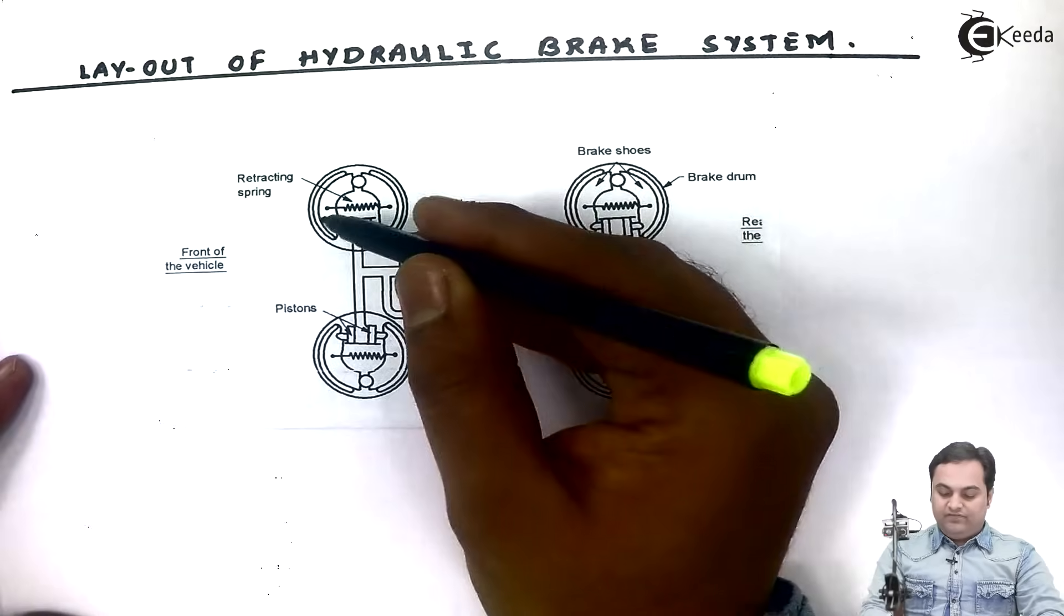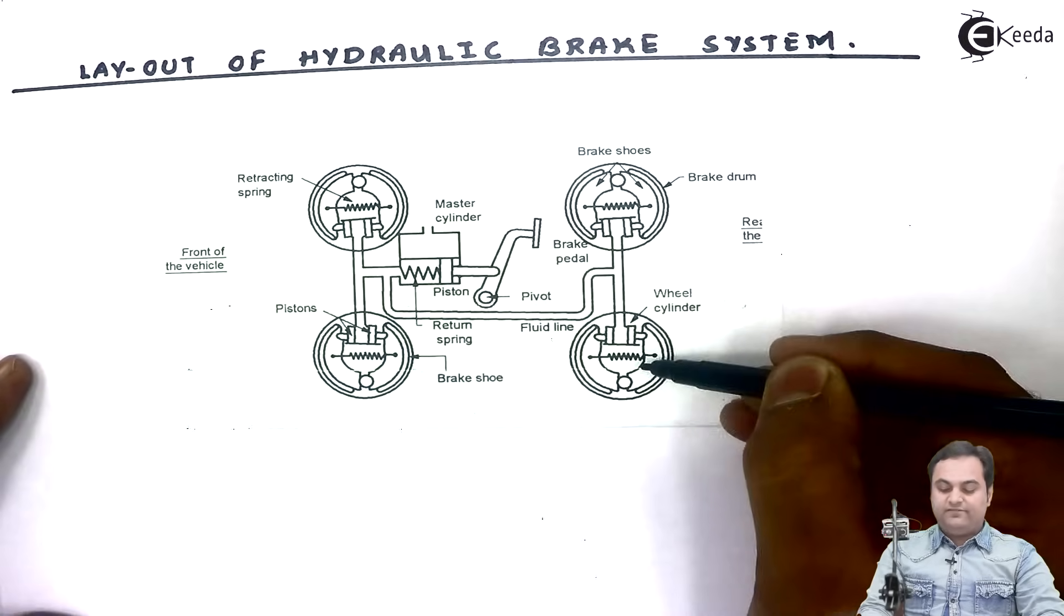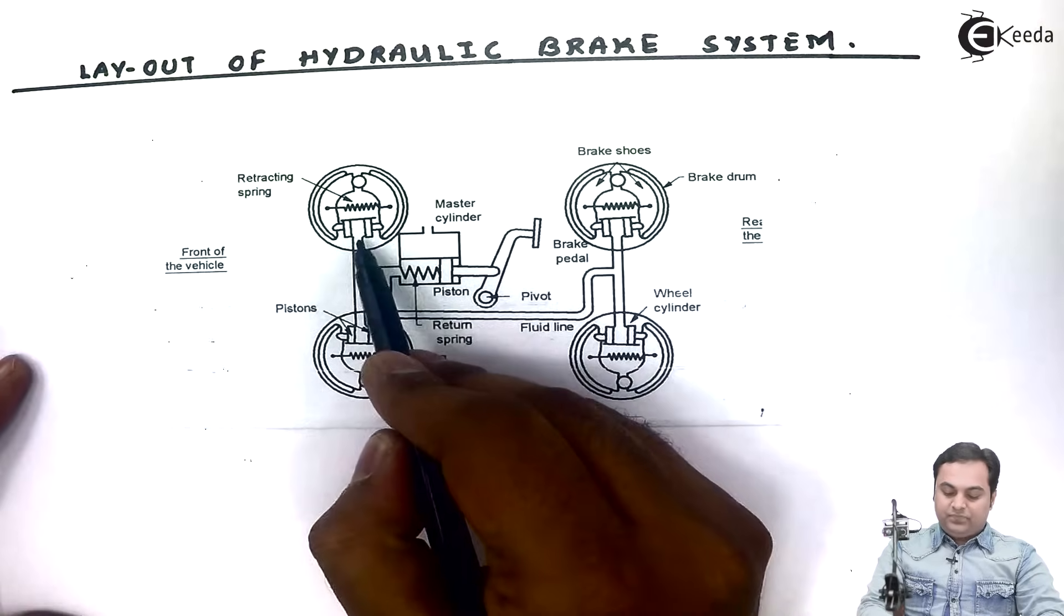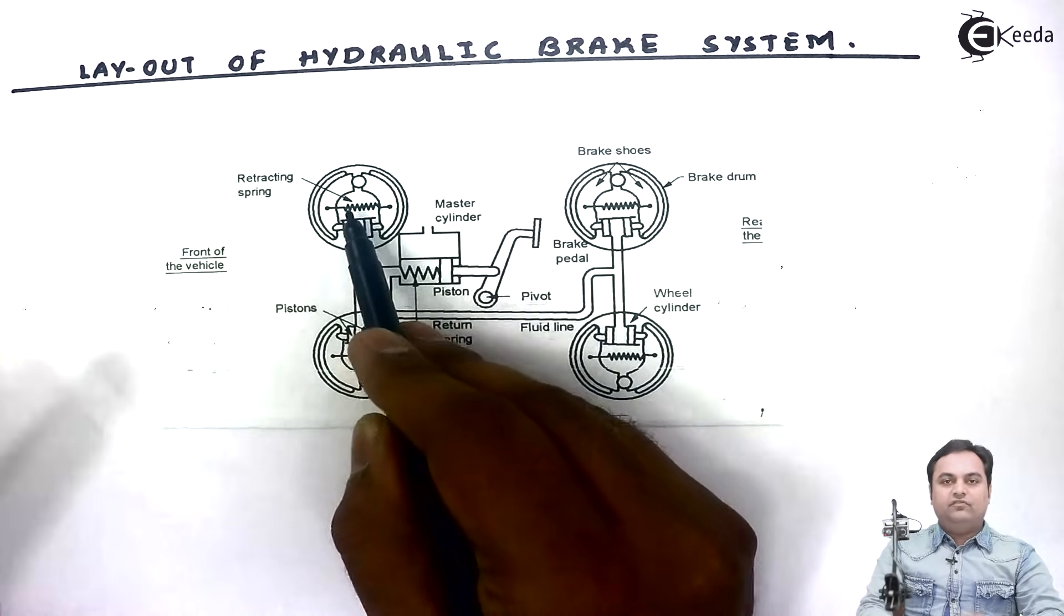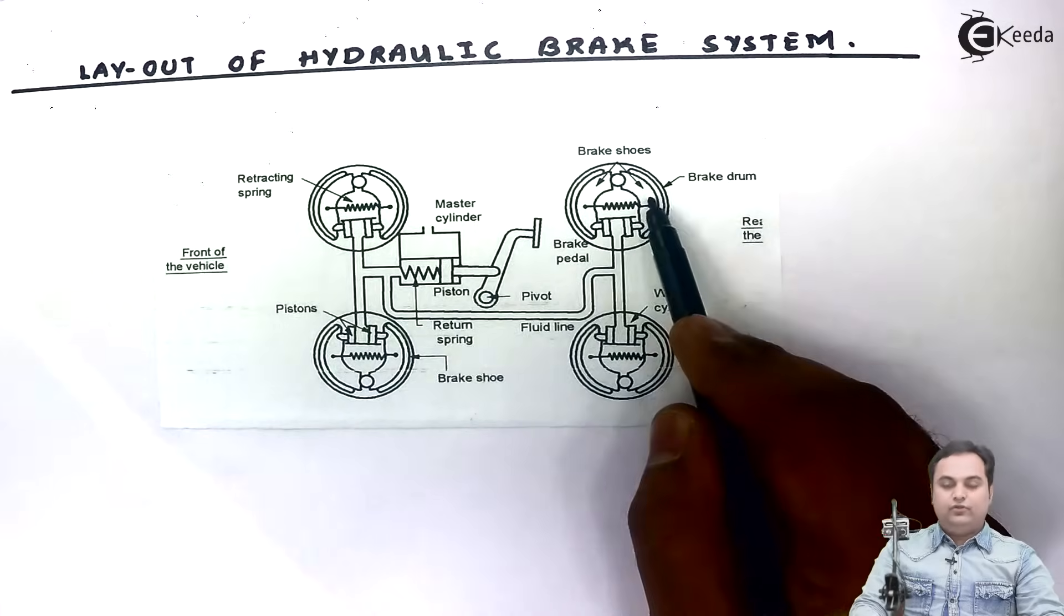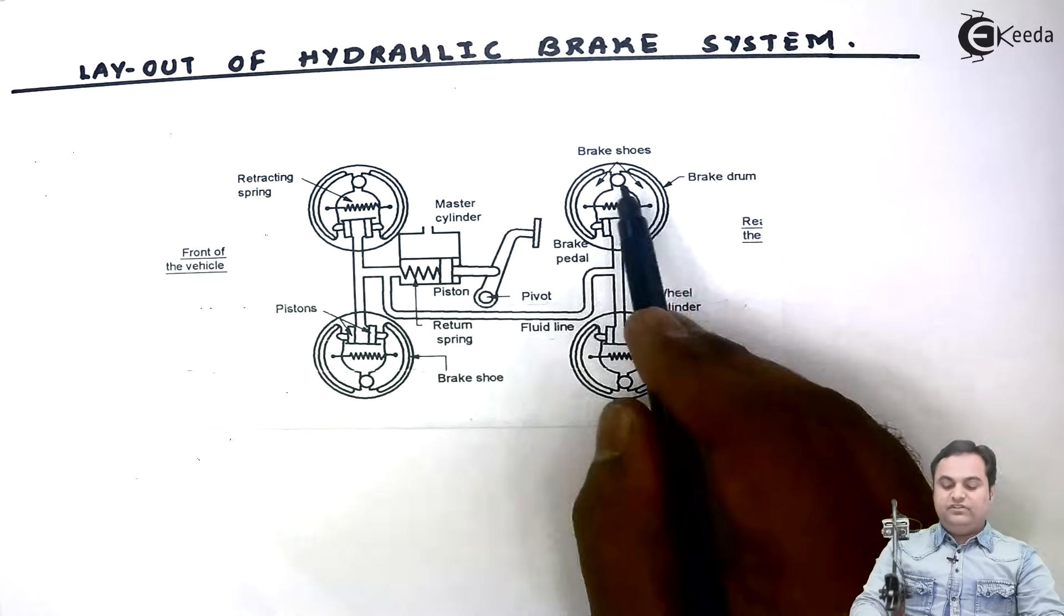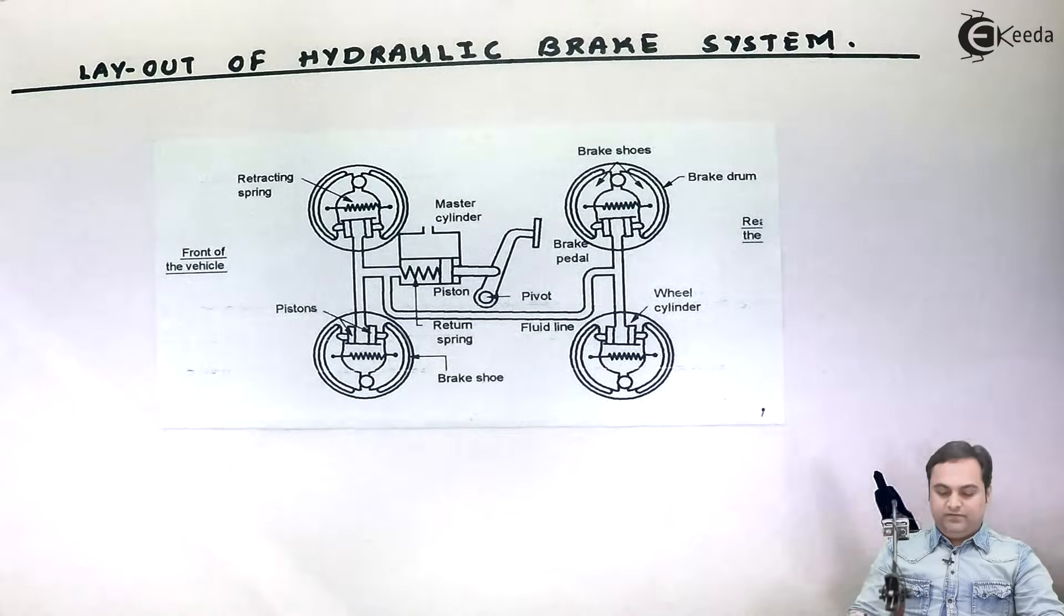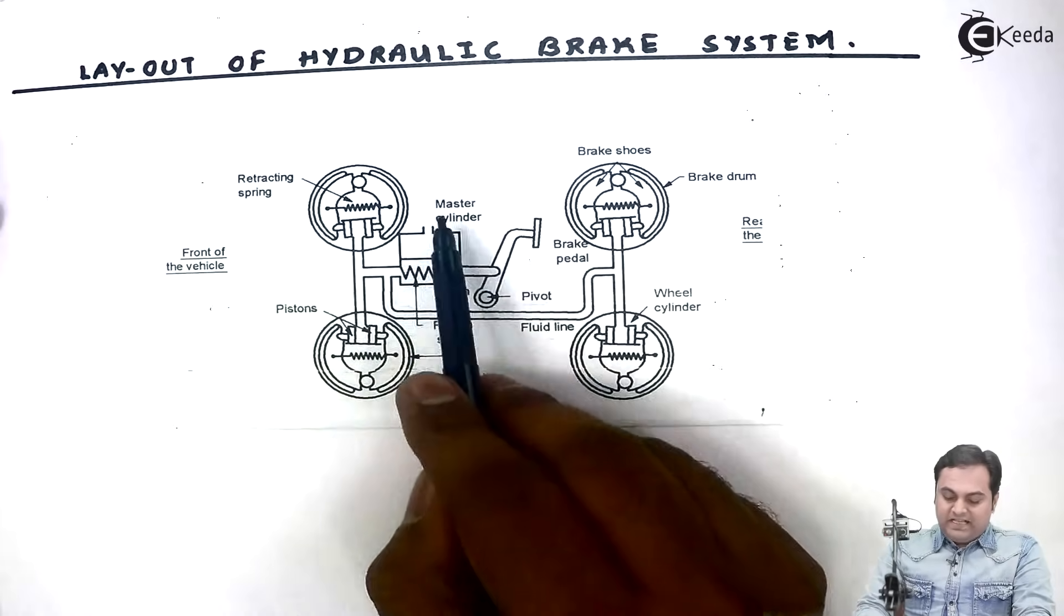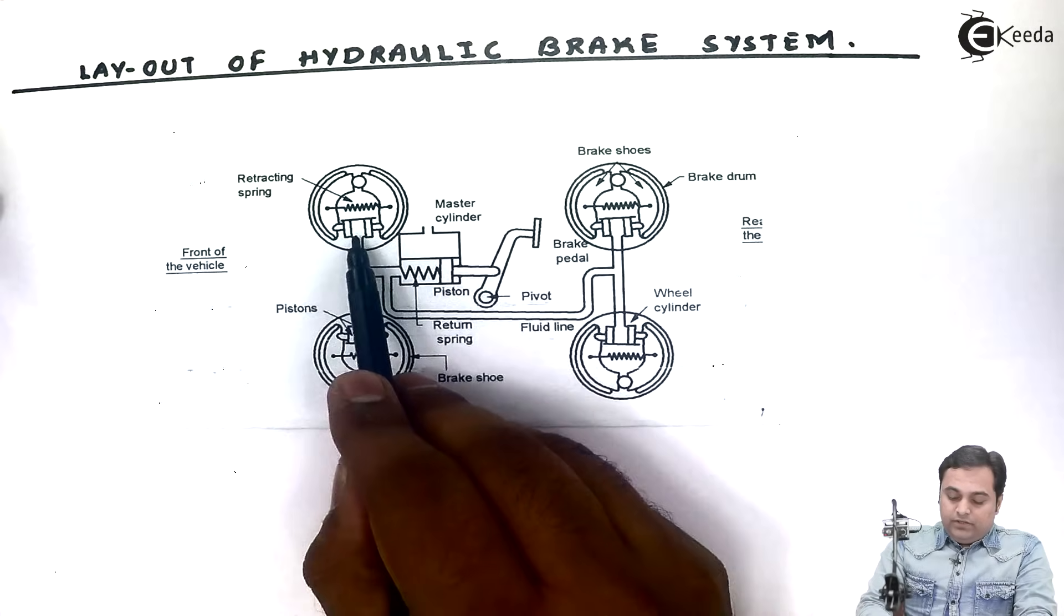We have one, two, three, and four - these are four wheels. As we can see, in one wheel we are having one internal expanding brake. In the second wheel also, third and fourth wheel - in all the wheels we are having internal expanding brake, also called as drum brake.